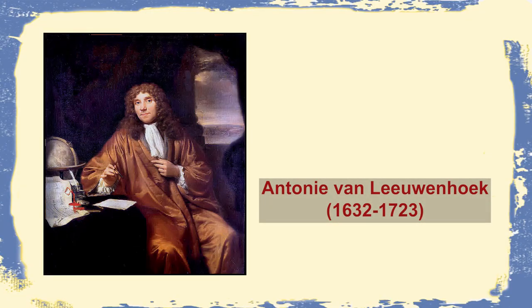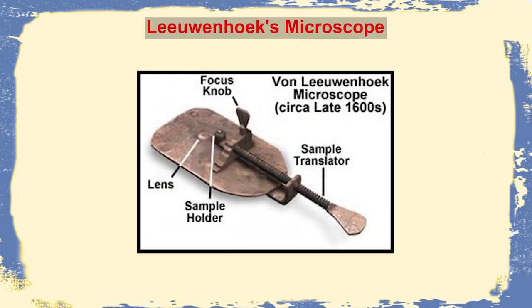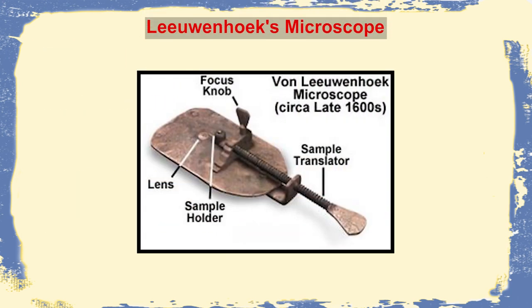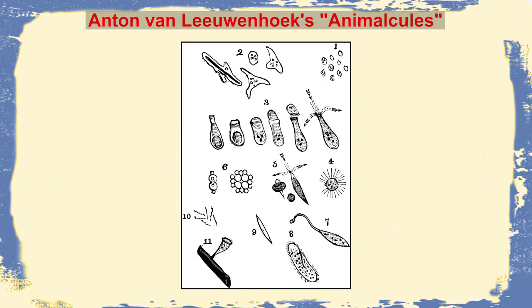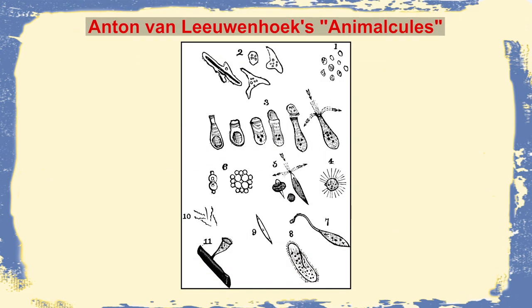Next came the contribution of Anton von Leeuwenhoek. In the year 1675, on September 17th, he first observed live microorganisms and named them 'animalcules,' meaning tiny creatures or tiny animals, using his single lens microscope that he had designed himself.